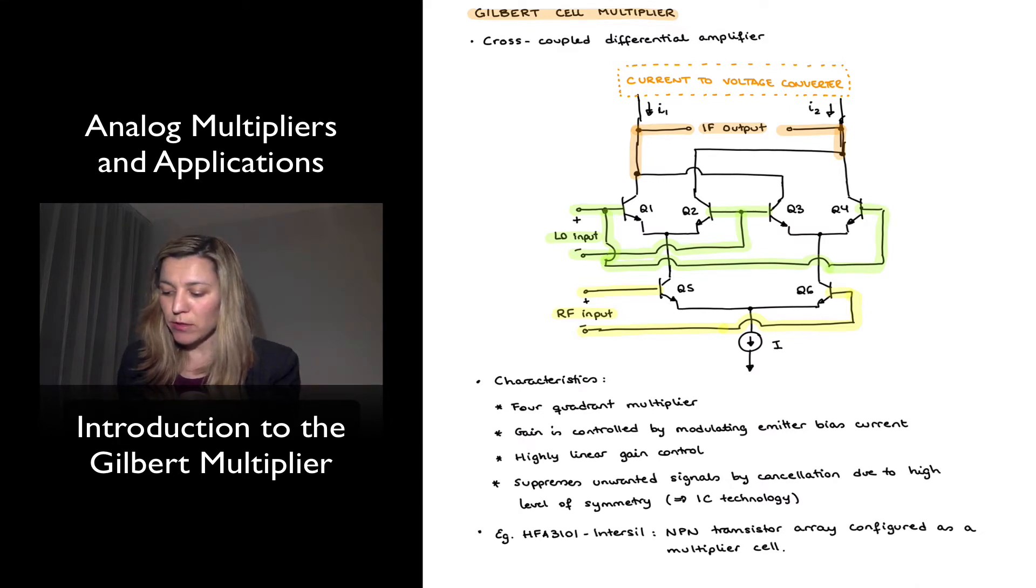And then the output, as any analog multiplier, there are two inputs and one output. The output is what I've labeled there as IF output, which is shaded in orange. And notice that it is a current output, and so that's why I've added up there a current to voltage converter, which is not part of the Gilbert cell, but it's something that you typically will connect if you needed to convert your current output to a voltage output. And that could be as simple as just connecting two resistors to VCC, for example.